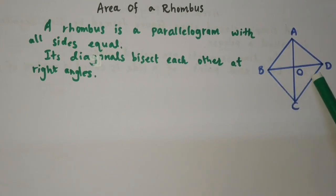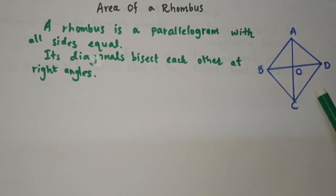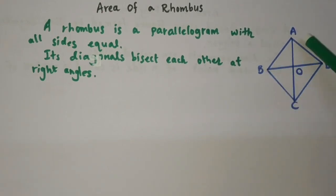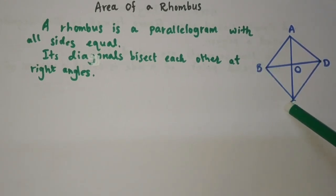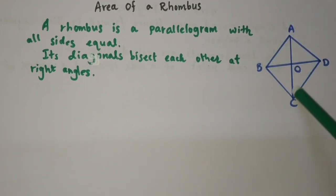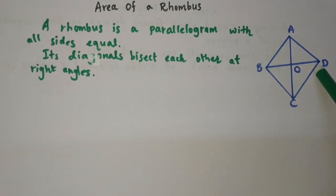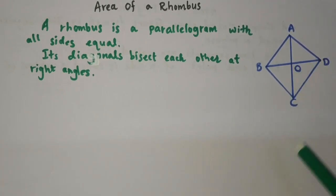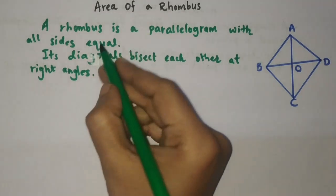In a rhombus, all four sides are equal: side AB is equal to side AD, which is equal to DC and equal to BC. One more important property of a rhombus is that its diagonals — diagonal AC and diagonal BD — bisect each other at right angles.